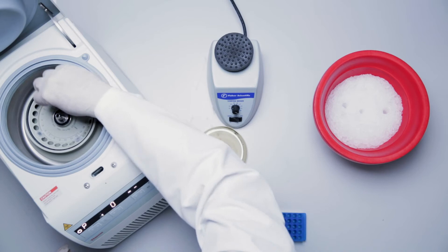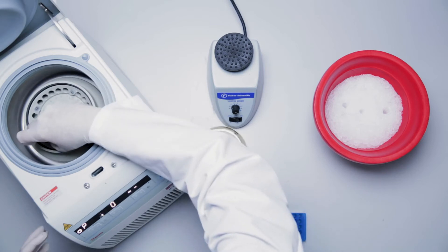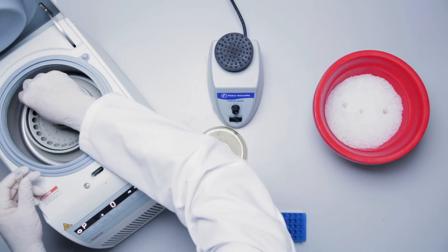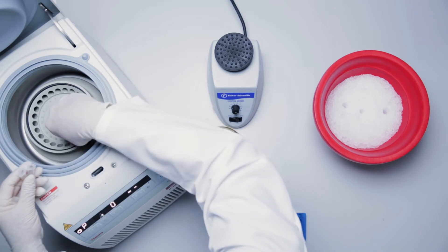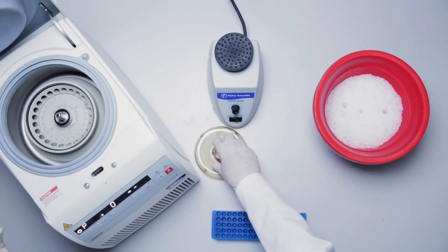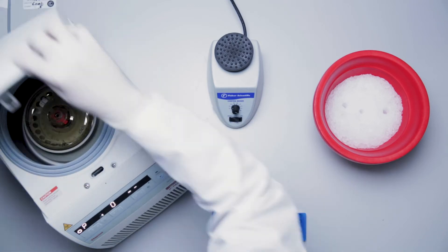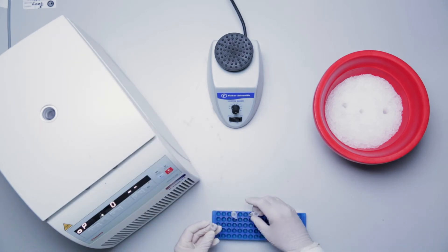If dilution is required, dilute serum or plasma samples in 1x universal assay buffer. For dilution of cell culture supernatant samples, use cell culture medium that was used to culture the cells. Be sure to note if there is a recommended sample pre-dilution factor so that it can be applied during the analysis step.